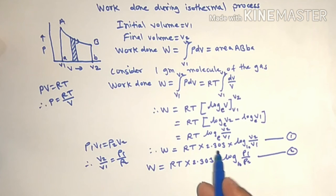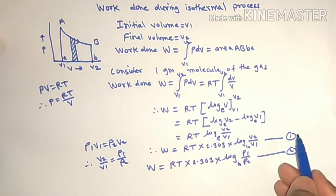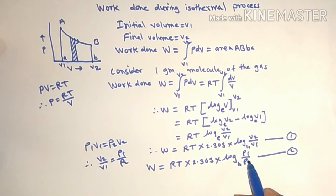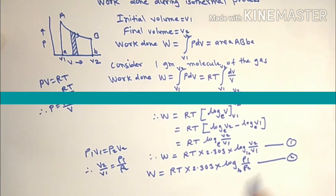So friends, today we have discussed work done during isothermal process in terms of volume V by equation first and in terms of pressure by equation second. Thank you.